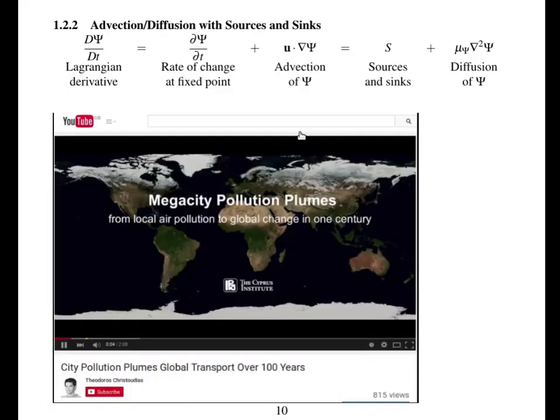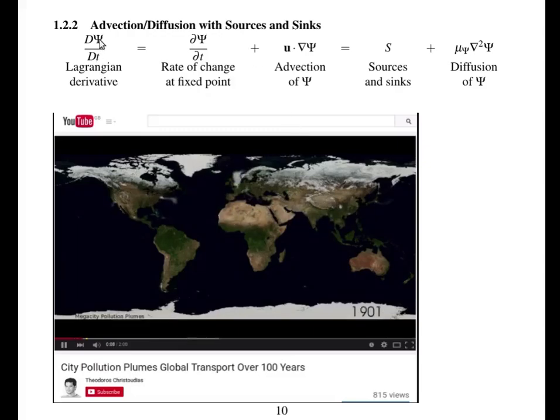So we'll now put some sources and sinks and some diffusion into that equation. So this is the same equation. Now I've got, I'm moving around a variable called psi. Here's the Lagrangian derivative again, which is rate of change at a fixed point plus the advection. And I've also got sources and sinks and diffusion. This is an animation from YouTube which shows the concentration of pollution from cities over the past hundred years.